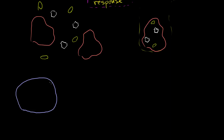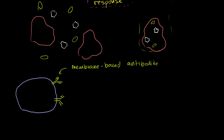I get very excited about B cells, and I'll tell you why in a second. It has all of these proteins on its surface — these are actually protein complexes, with four separate proteins. We can call these membrane-bound antibodies. You've probably heard the word — do you have antibodies for such and such flu or virus? Antibodies are just proteins.